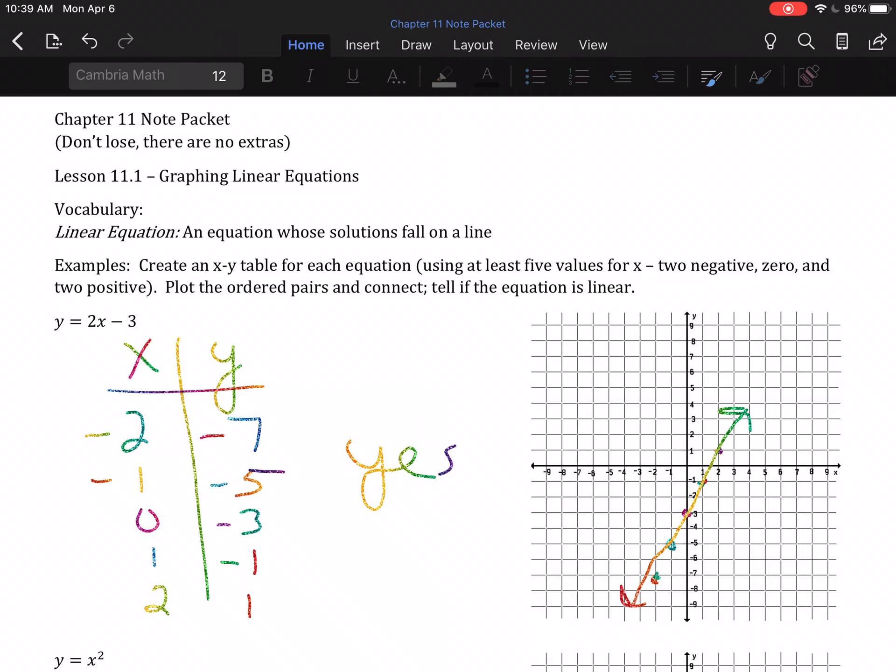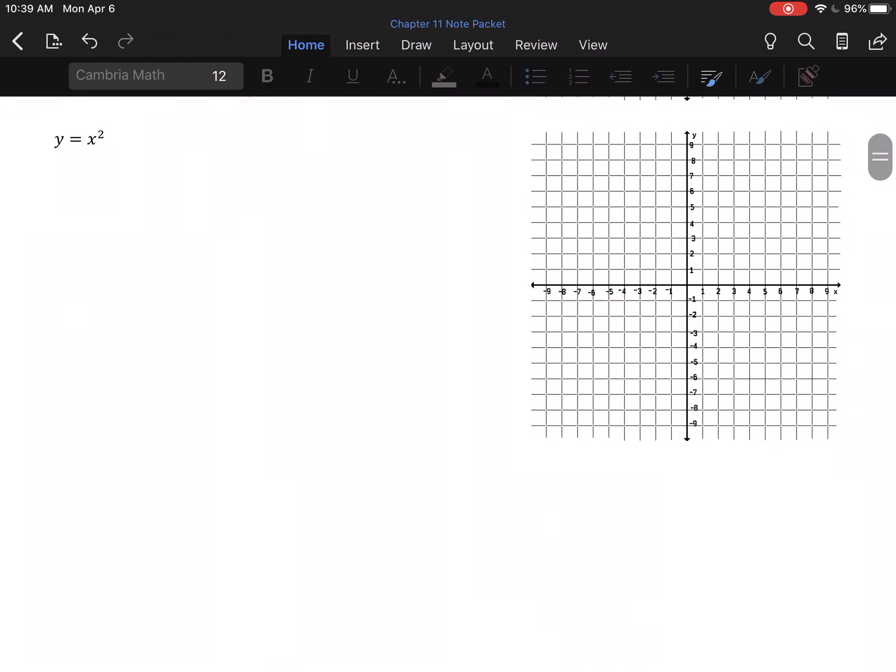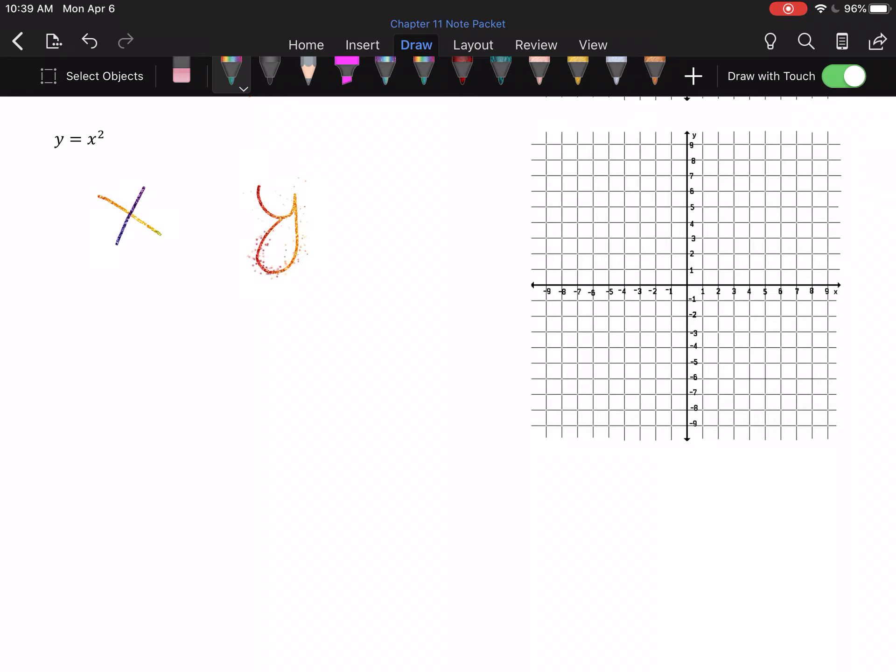So, let's move on to the next example. Y equals X squared, and that's it. Okay, so XY table. Again, use negative 2, negative 1, 0, 1, and 2 where at all possible. The only time that would be not recommended is if you have a fraction going on. There is an example like that. It's the next one, actually. We'll talk about it. So, here we're just squaring our X values. So, negative 2 squared is 4. Not negative 4. Negative 2 times negative 2 is positive 4. Negative 1 squared is 1. 0 squared is 0. 1 squared is 1. 2 squared is 4.